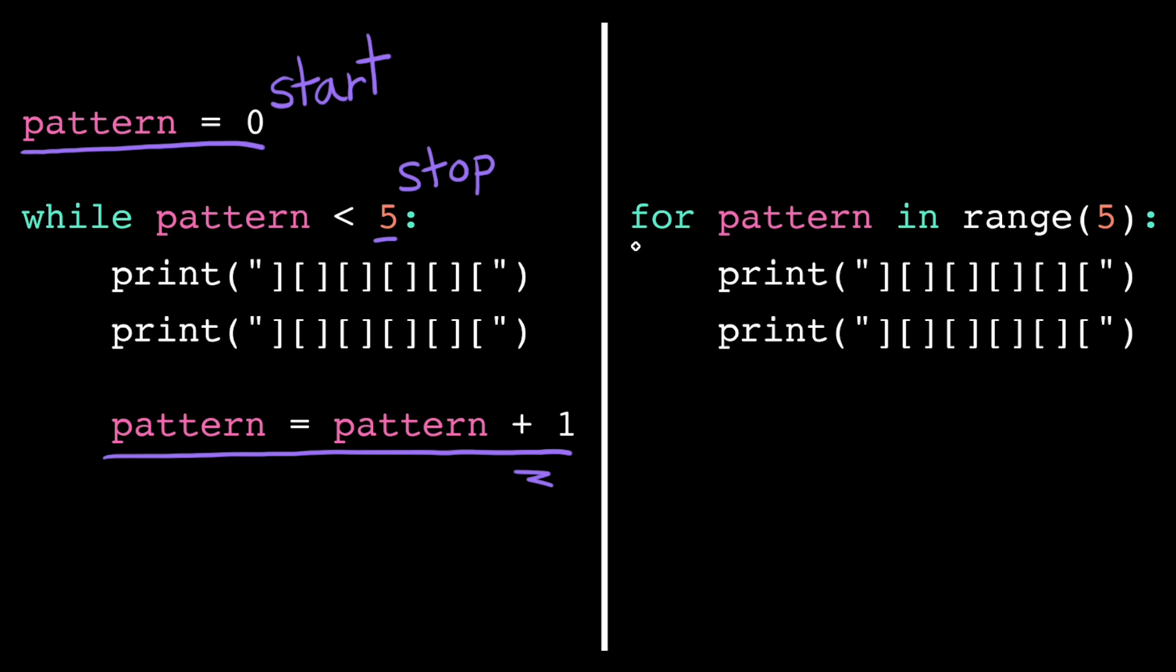A for loop starts with a keyword for, then the name of the loop variable, the keyword in, and then the range function, ending of course with a colon. The argument to the range function is just the stop value for the loop variable, which tells the computer when to terminate the loop.